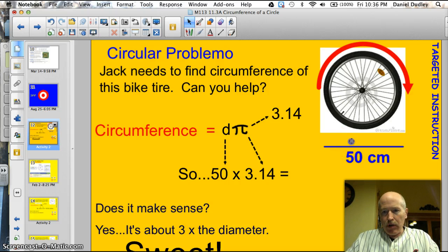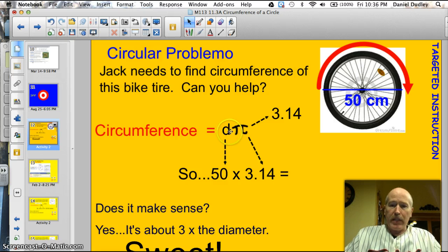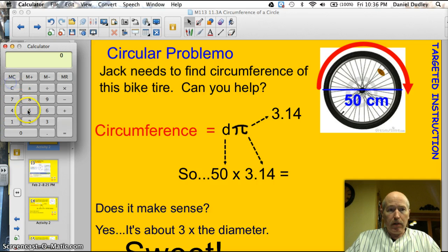Well, let's see. We know that the circumference is based upon the diameter. And the diameter of this circle here, or bike tire, is 50 centimeters. So I can find the circumference by taking the diameter, D, that's 50, times pi. This funny little symbol is called pi. And that is 3.14. So if I take 50 times 3.14, pop that into my calculator, 50 times 3.14, I get 157.